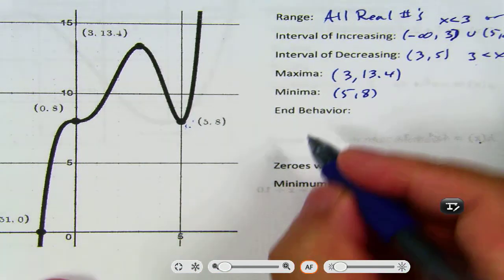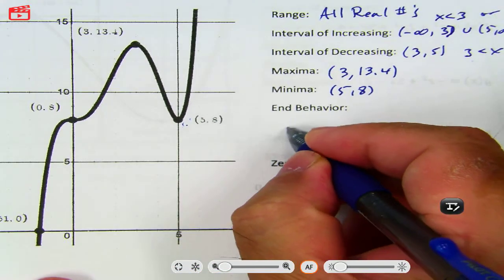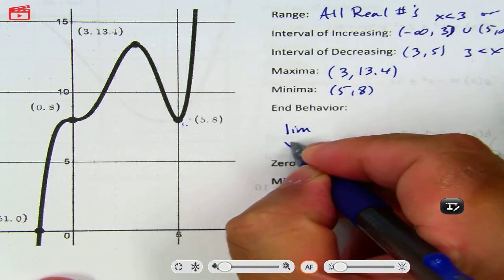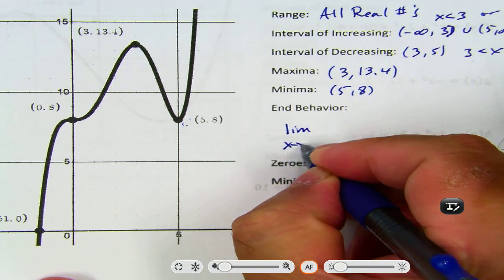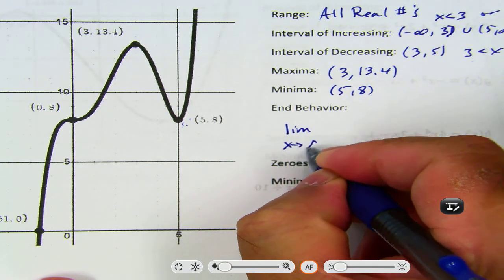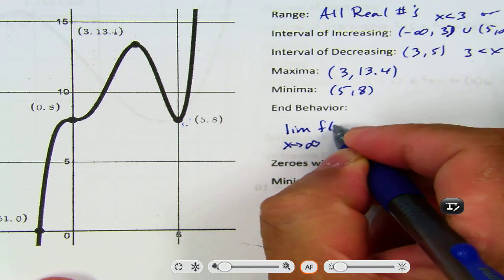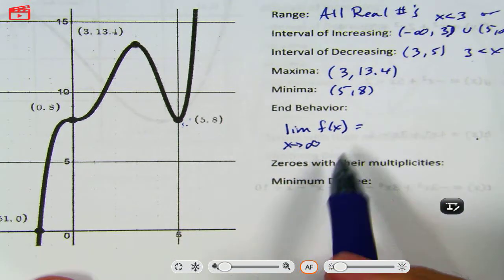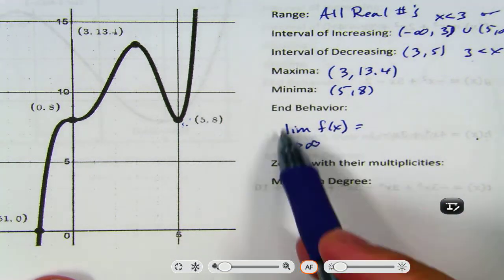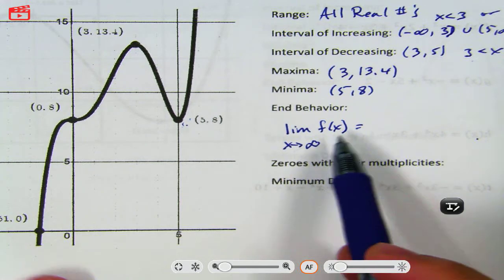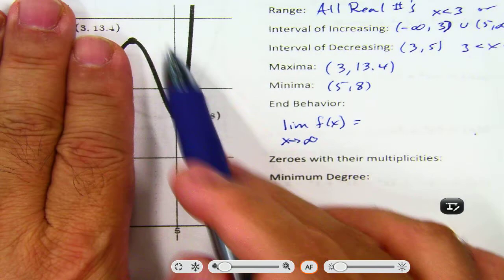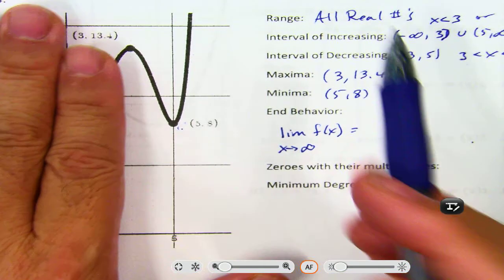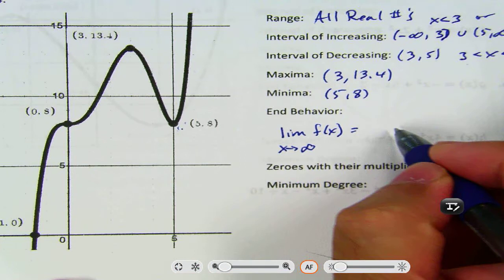End behavior. Remember, end behavior always looks the same, at least the way you write it. X to positive infinity of the function — remember, this is the right side. So you look at the right side. What's going on on the right side? It's going straight up. So that's positive infinity.